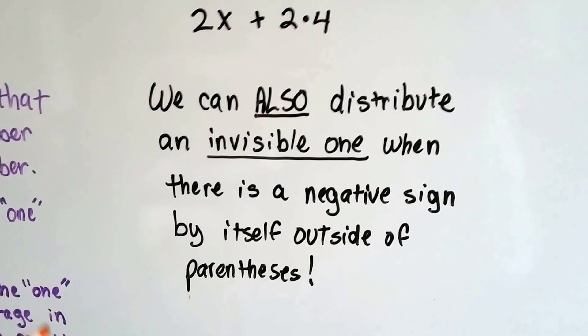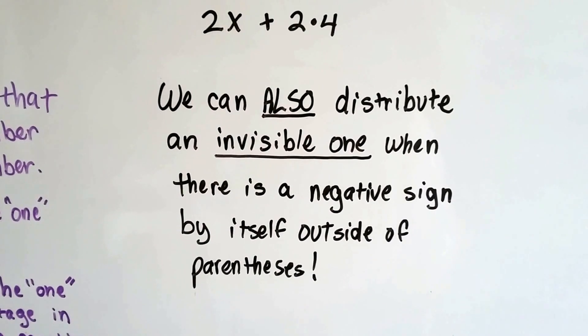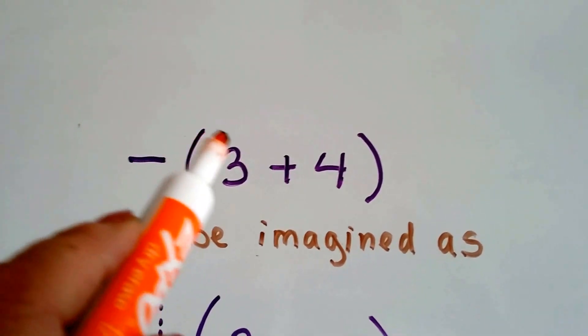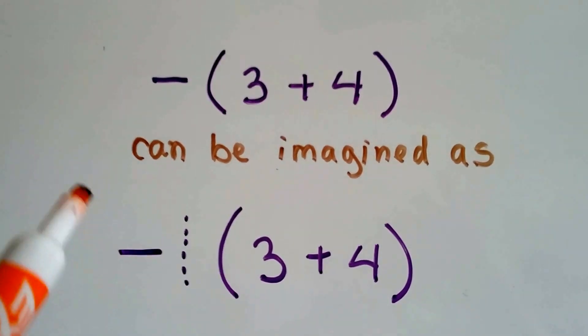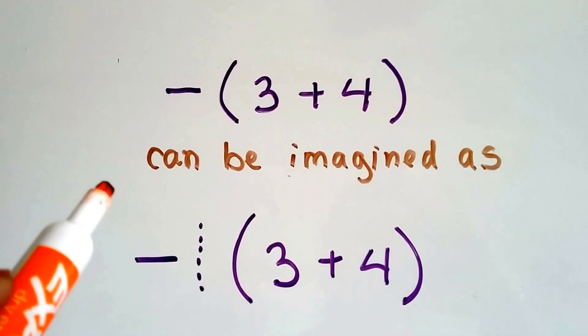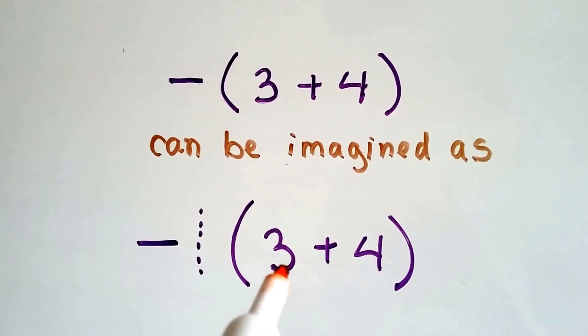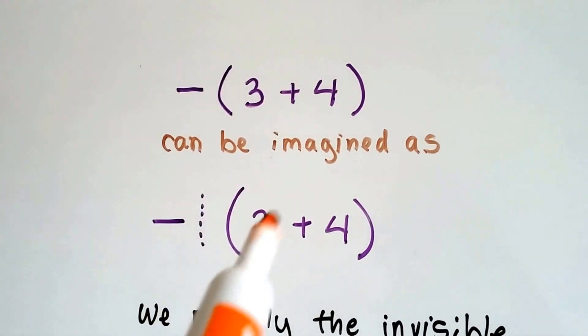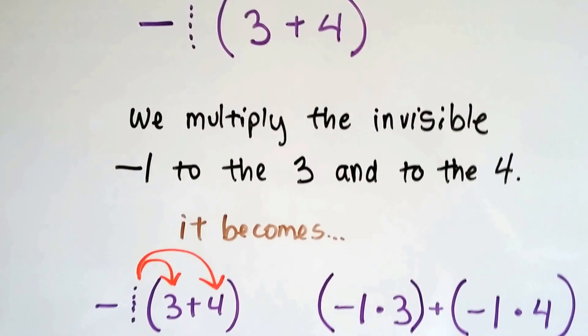Well, we can also distribute an invisible 1 when there's a negative sign by itself outside of parentheses. Yep, there's another invisible 1. You might see a problem like this: negative and then a 3 plus 4 inside of parentheses. Or it could even be a variable. But we imagine it as a negative 1 and then the 3 and the 4 in the parentheses.